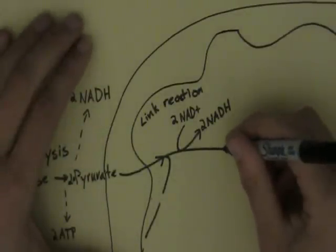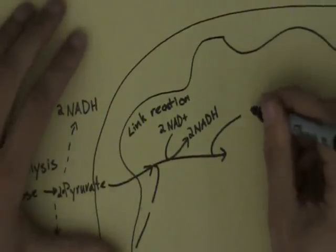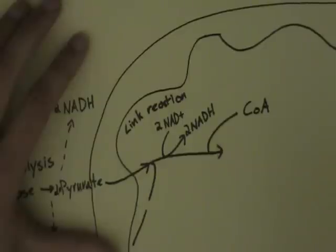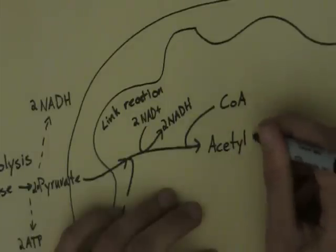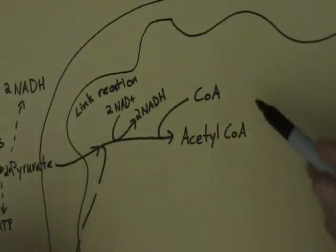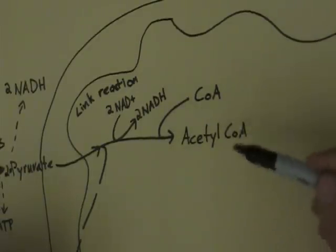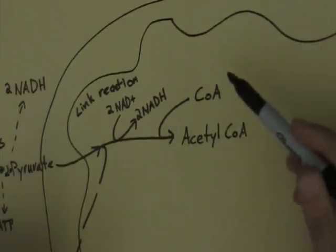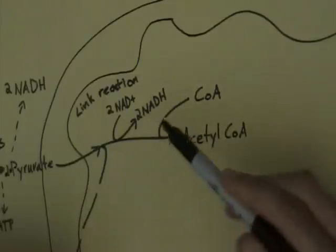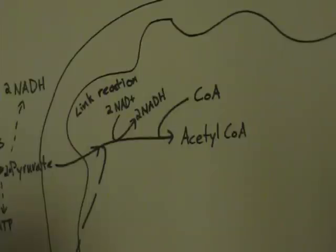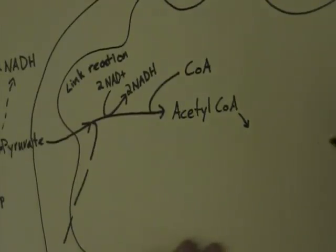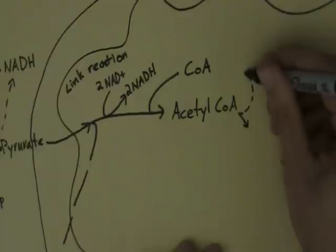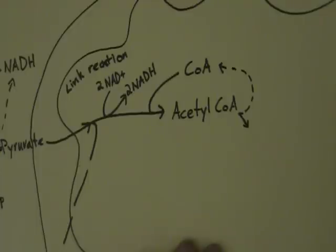There is another molecule that's important here that comes in and joins in — this is called CoA. That reacts to form something called Acetyl CoA. You're not going to get a lot of exam questions on this, but this is a high-level part of your understanding — what's going to differentiate top students. The CoA comes in and helps to transport the pyruvate, converting it into Acetyl CoA. Part of this molecule then enters the Krebs cycle; the rest goes back around to regenerate the CoA — it's just like a little link step, a little transport molecule.